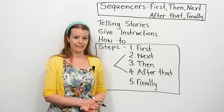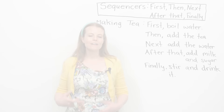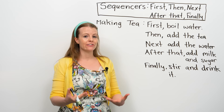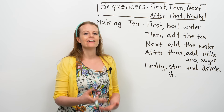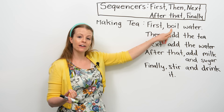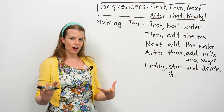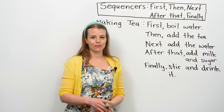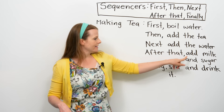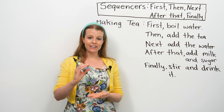Let's look at another example. One of my favourite things in life is drinking tea, so I'm going to use sequencers to teach you how to make a cup of tea. First, you boil the water. Then, you add tea to your cup — maybe you have a tea bag. Next, you add the hot water to the cup. After that, add milk and sugar. Finally, you stir it and you drink it. So these are the steps in making a cup of tea.